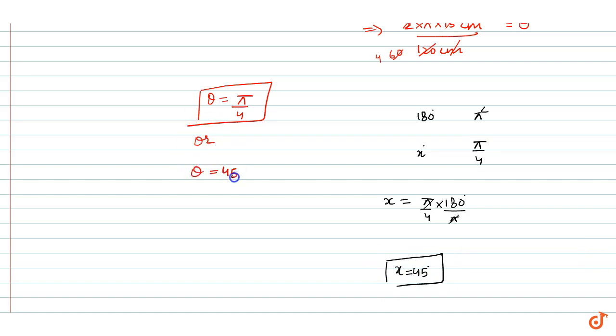So here theta is π/4 radians, and theta can also be expressed as 45 degrees. So our required answer is that the angle subtended at the center is π/4 radians or 45 degrees. This is our solution.